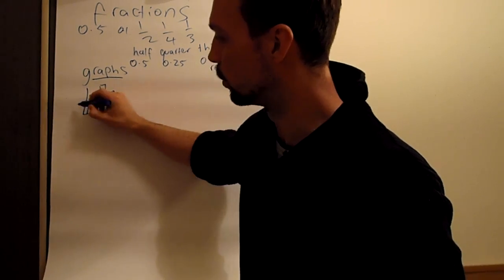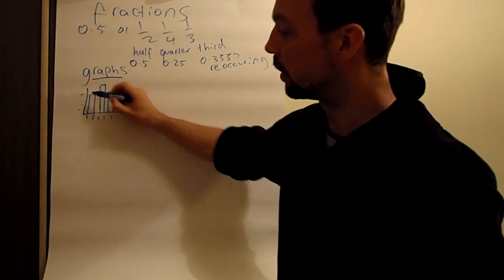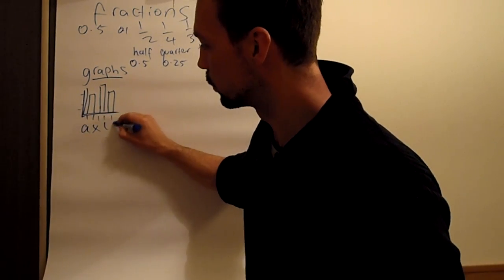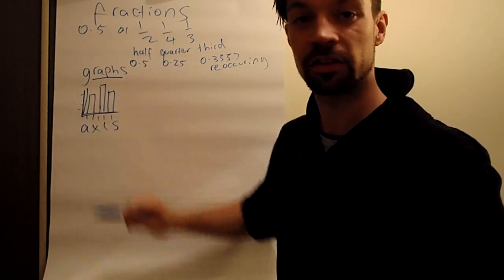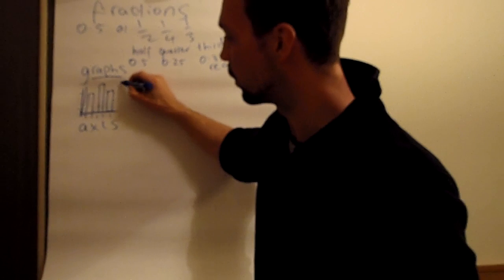And you have some numbers on this side and you have some numbers on this side, and these two lines are called axis. You have the vertical axis and you have the horizontal axis. And this is a bar graph. It's very commonly used with data.